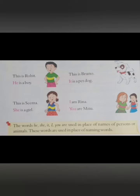Let me explain with a few examples. Look at the picture. This is Rohit - he is a boy. Instead of Rohit, we have used 'he.' Next is Bruno - it is a pet dog. Instead of Bruno, we have used 'it.' This is Seema - she is a girl. Instead of Seema, we have written 'she.' So instead of repeating names, we use pronouns. The words he, she, it, I, you are used in place of names of persons or animals.